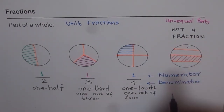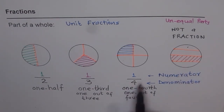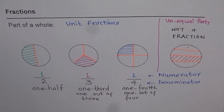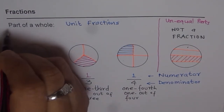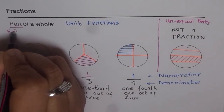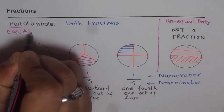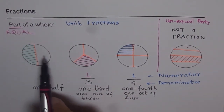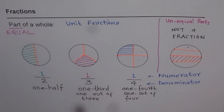So you cannot write it as numerator over denominator separated by a line. We will keep it away for the time being. When we are talking about fractions, it is important that we have equal parts. A whole should be divided into equal parts, and then each part represents a fraction of the whole.